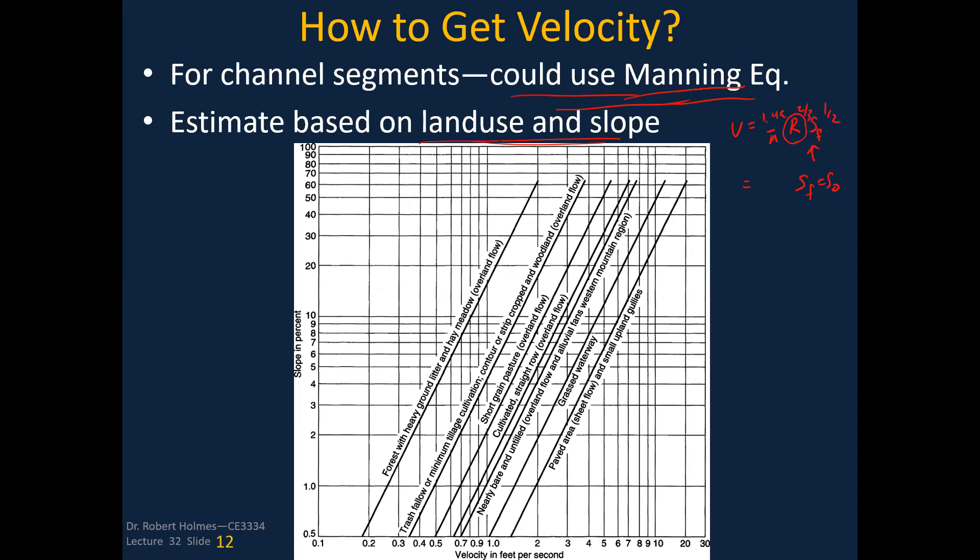If I had some other type of overland flow like a grass field, you can see this graph here gives you various types of land use. Here's forest with heavy ground litter. We had short grain pasture. That would be something like the field I had in my example. You'll notice it's got the slope in percent. So if I had a four percent slope and I went over to the two here, then I would basically be estimating somewhere around like 1.4 feet per second for the overland flow velocity there. If I had my L divided by that velocity, that would give me a time to go through the overland flow.